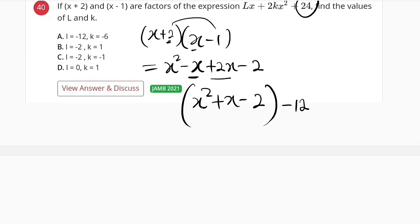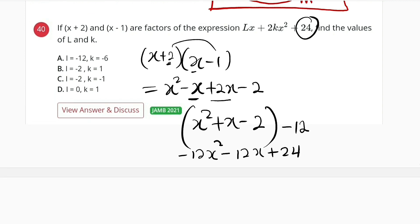If you do that, you see the first term becomes negative 12x squared, then minus 12x, then plus 24. Now we can easily relate the two expressions together.